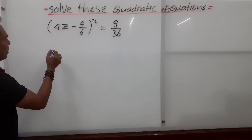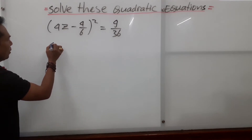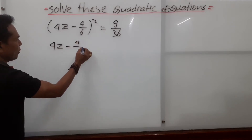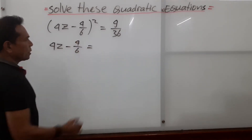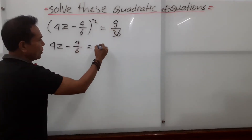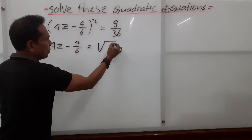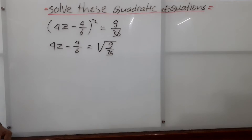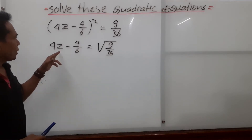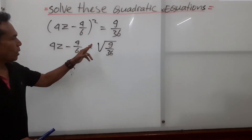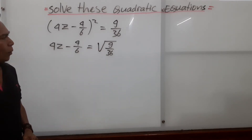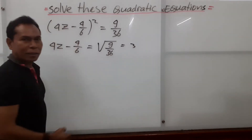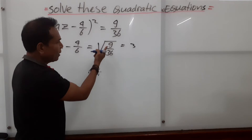We put here: 4z minus 4 over 6 equals the square root of 9 over 36. So we remove the square by taking the square root of both sides.